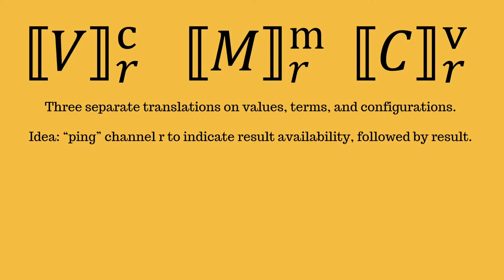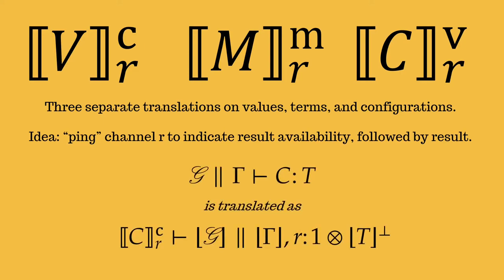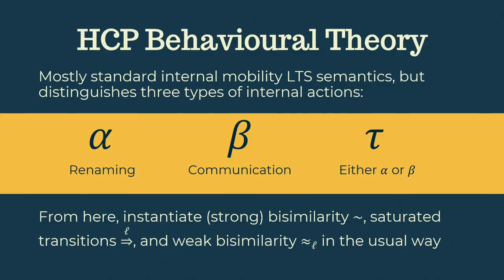Now, we can see this in the translation of HGV typing judgments to HCP here, where the R channel has a type which sends a ping and then continues as a channel capable of transmitting the return value. To get correspondence results, we make essential use of HCP's behavioural theory, which is very similar to the usual label transition system for a pi calculus with internal mobility. However, we distinguish three different types of internal action. So α actions characterize renaming, so for example channel forwarding, β actions are communications, and then τ actions are either α or β actions. So from here, we can instantiate bisimilarity, saturated transitions, and weak bisimilarity in the usual way.